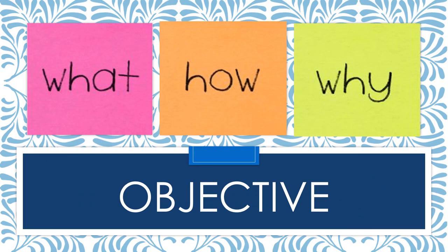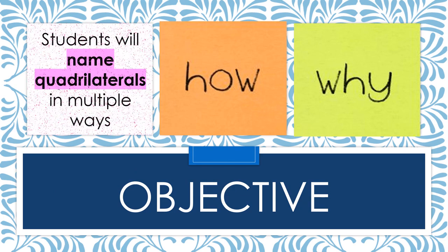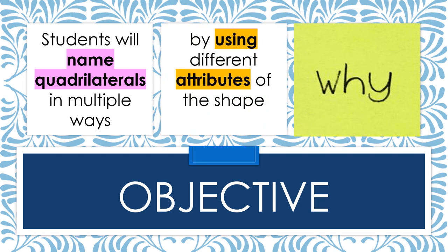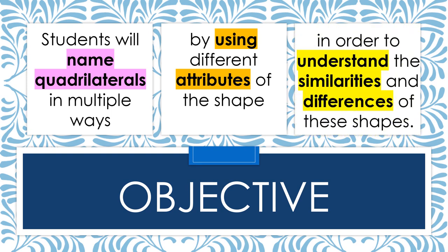Objective. What is the focus of our learning today? Students will name quadrilaterals in multiple ways. This means that we can take a look at a quadrilateral and determine whether it has additional names that we can name it by. How will we know what names to use for quadrilaterals? We will need to pay close attention to the different attributes that we are observing as we examine different shapes. Why is this learning important? We want to be able to understand both the similarities and the differences of the shapes we are examining.